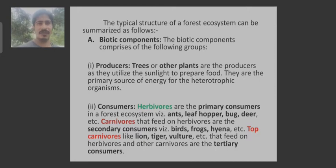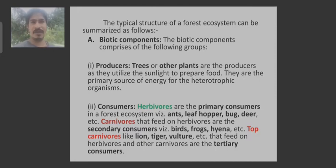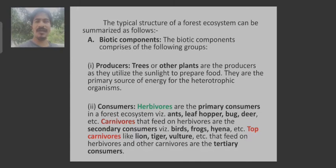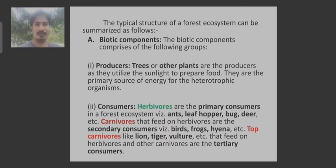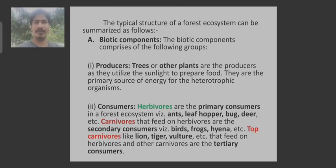The typical structure of a forest ecosystem may be summarized as follows. An ecosystem comprises biotic and abiotic components. The biotic components of a forest include trees and other plants and all the higher group of animals. Mostly the trees fall under the category of producers, which prepare food by the process of photosynthesis.